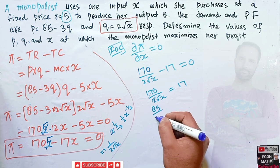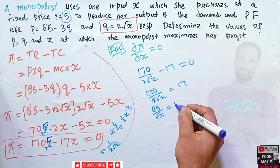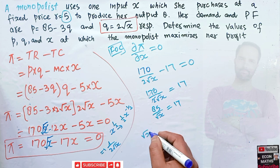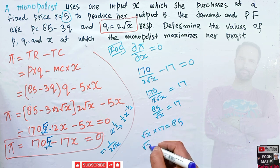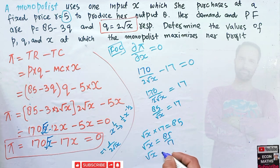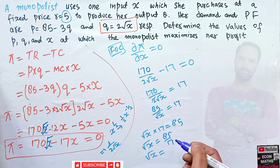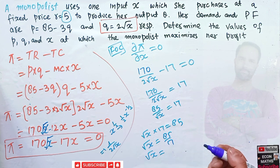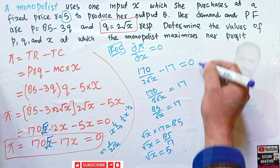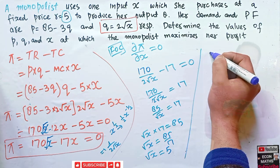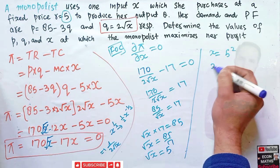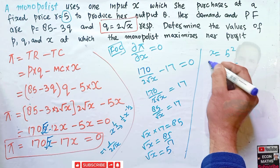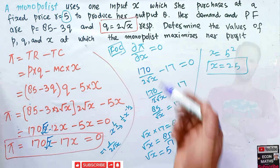Setting the first order condition: 170 upon 2 under root X equals 17, so 85 upon under root X equals 17, which gives under root X equals 85 upon 17 equals 5. Squaring both sides, X equals 25. So the monopolist needs to purchase 25 units of input.